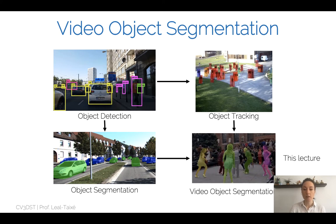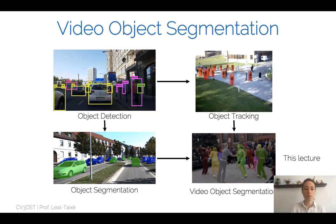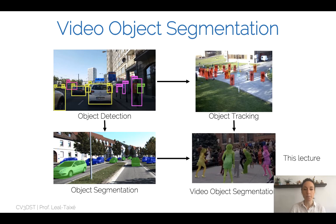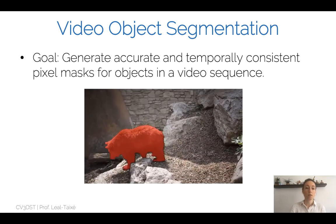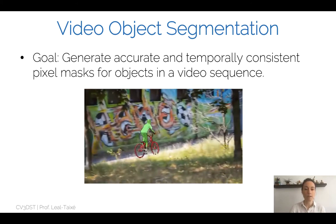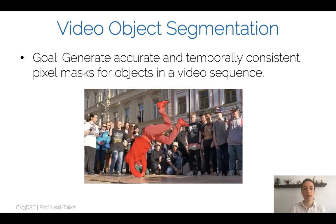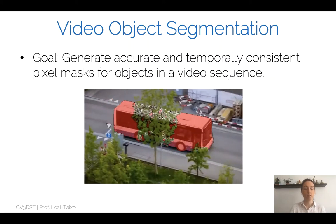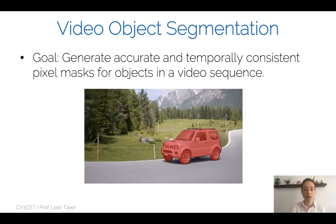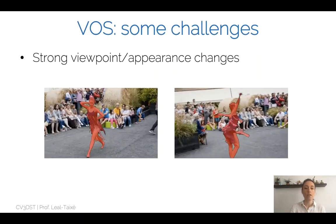We saw semantic segmentation, which means labeling every pixel of an image with a semantic category, and instance segmentation, which means breaking down those categories into different instances within a class — for example, the different cars inside the semantic class 'car.' Now, for video object segmentation, we take an object — one of these dancing persons — and we want to follow it throughout the video sequence. We have all types of challenges, including similar objects like cars which can be confused with each other.